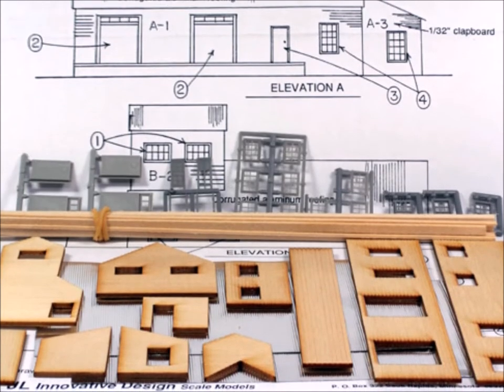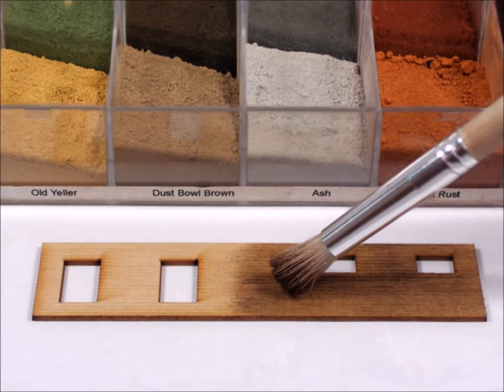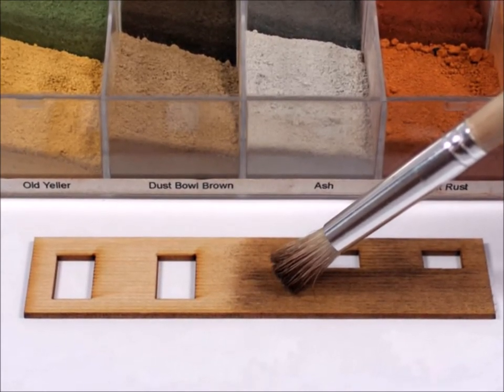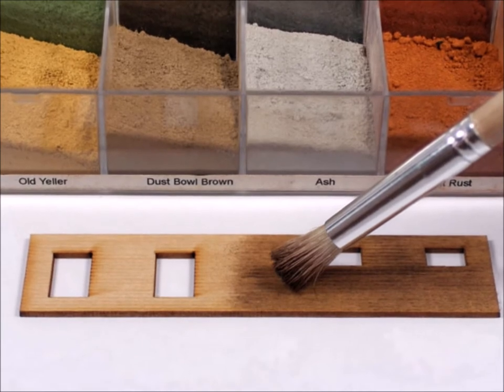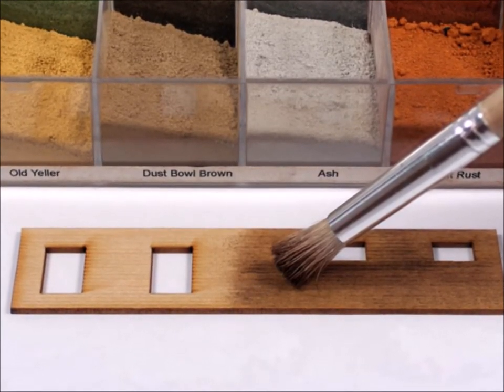Now on these wooden kits I almost always color them with my weathering powders. They're clean, they're fast, there's no drying time, and importantly there's no warping like you can get sometimes with paints and stains. And you can move right along in construction.